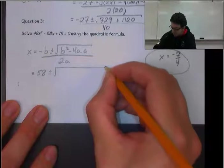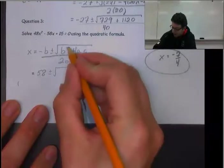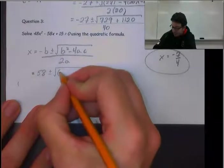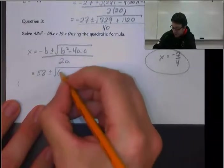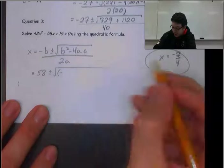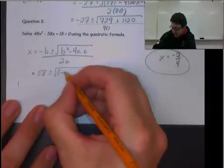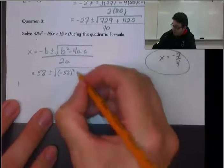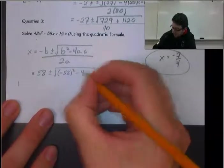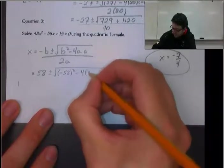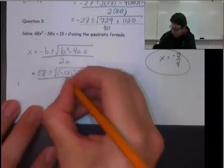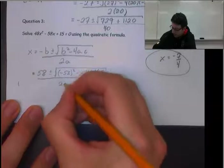Then b², so that's (-58)². But again, if you're using a calculator, use brackets. Don't write -58², write (-58)², or your calculator will give you a negative number. Minus 4, a is 48, and c is 15, all over 2a, which is 48.